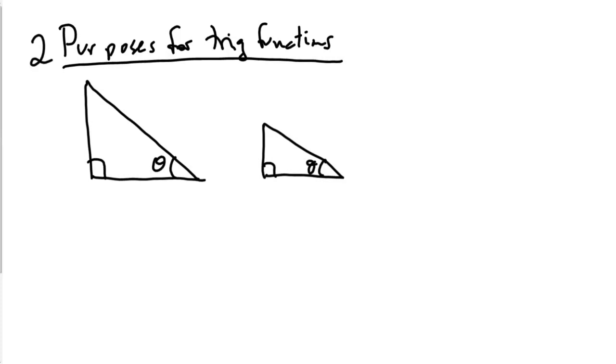Then, for example, because they are similar here, we know that the ratios between two corresponding sides on each one, so a over b and a prime over b prime, are the same thing. And we call those ratios, for example, this ratio here would be called the sine of theta.